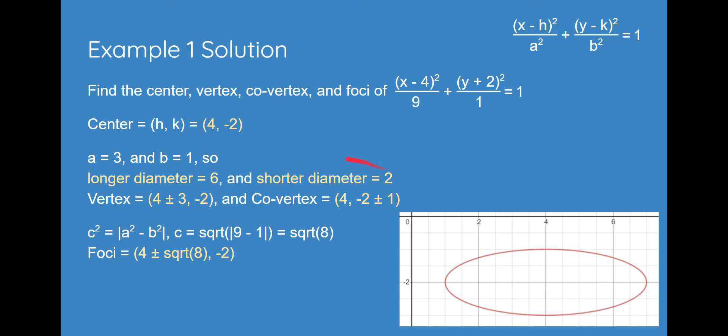And so, basically, since we know longer diameter is 6, shorter diameter is 2, we get a is 3, b is 1. We can use the center, which is 4, negative 2. We simply go over right and left, three spaces, 1, 2, 3, 1, 2, 3. And then, we get those two as our vertex because we know these are on either end of the longer diameter. And we basically follow the same steps for the shorter diameter. And the two points on the end will be co-vertex.